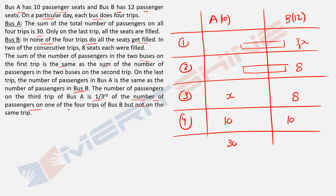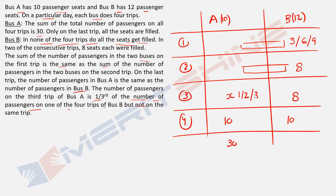We have X in Bus A Trip 3 and 3X in Bus B Trip 1. Since Bus B never fills all seats, 3X must be less than 12 and a multiple of 3 — so the options are 3, 6, or 9. That gives X as 1, 2, or 3 respectively. For Bus A, the two remaining trips (1 and 2) must each be less than or equal to 9.